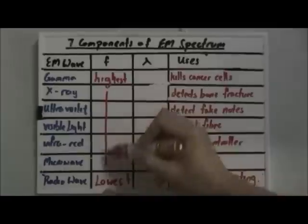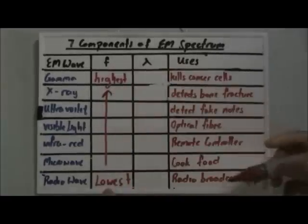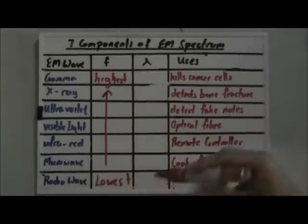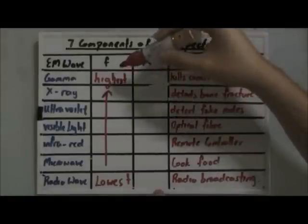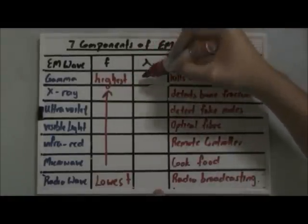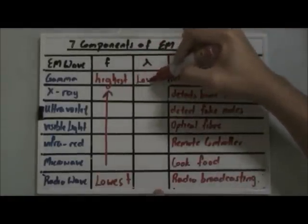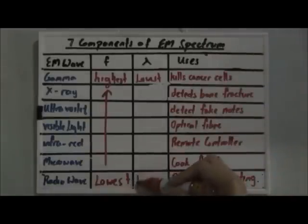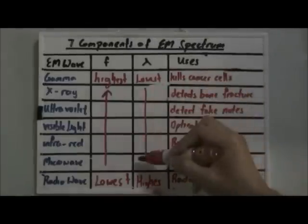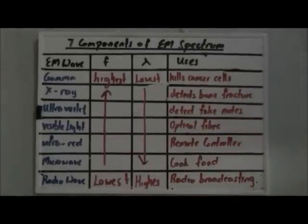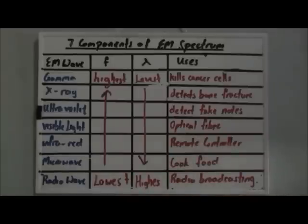The order goes like this. And for the wavelength, it is the opposite of the frequency. Since it has the highest frequency, it will have the lowest wavelength, and radio wave will have the highest wavelength. So it goes this way. Now it's very important to remember the order of the frequency and wavelength because this is quite a popular O-level question.